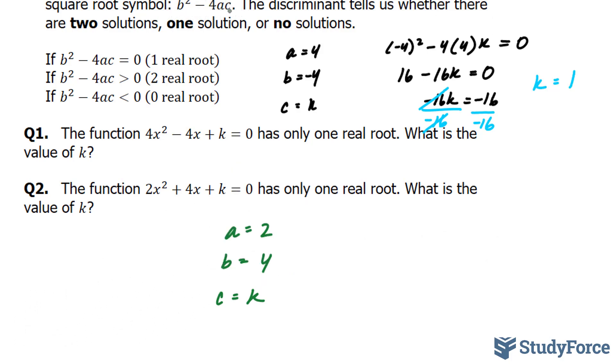Using the discriminant formula, for there to be one real root, this becomes 16 and this becomes -8k.